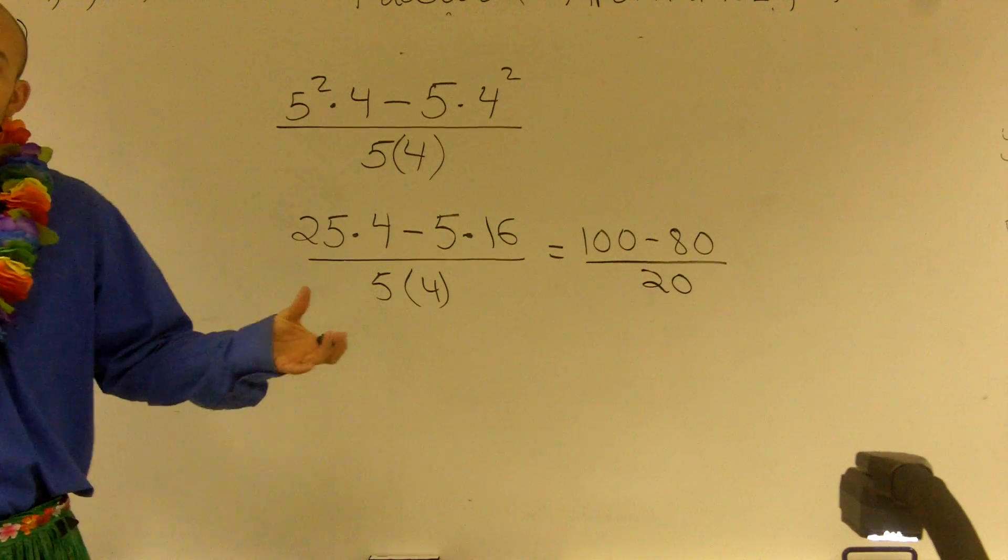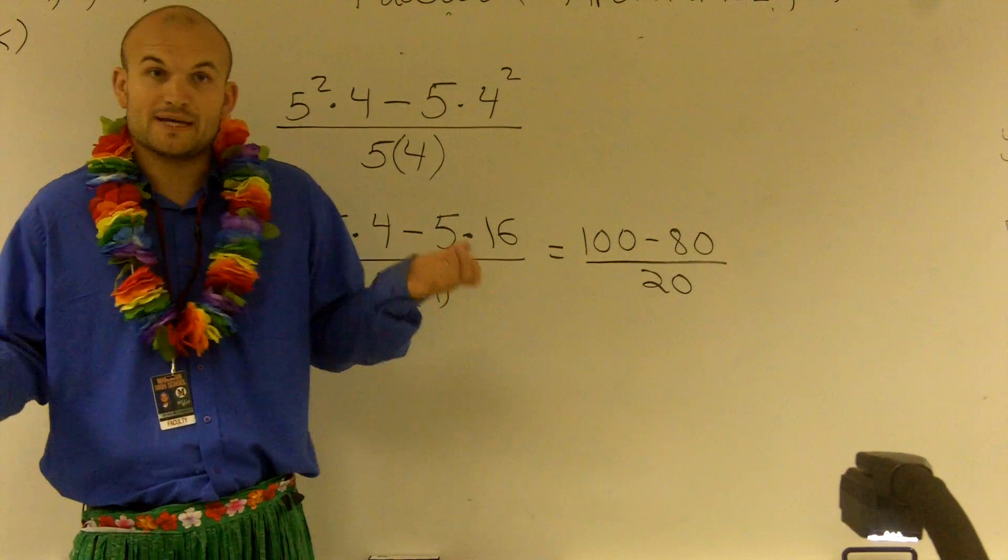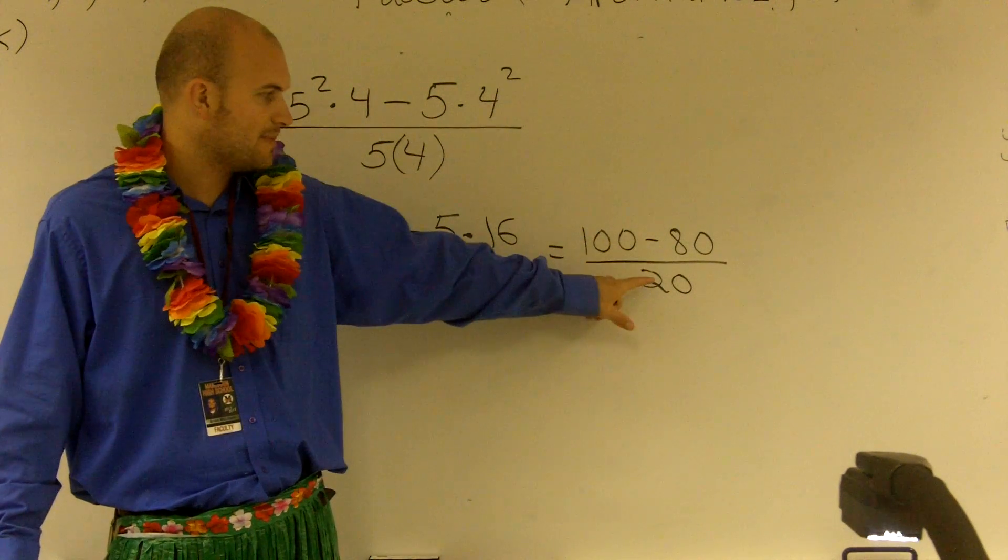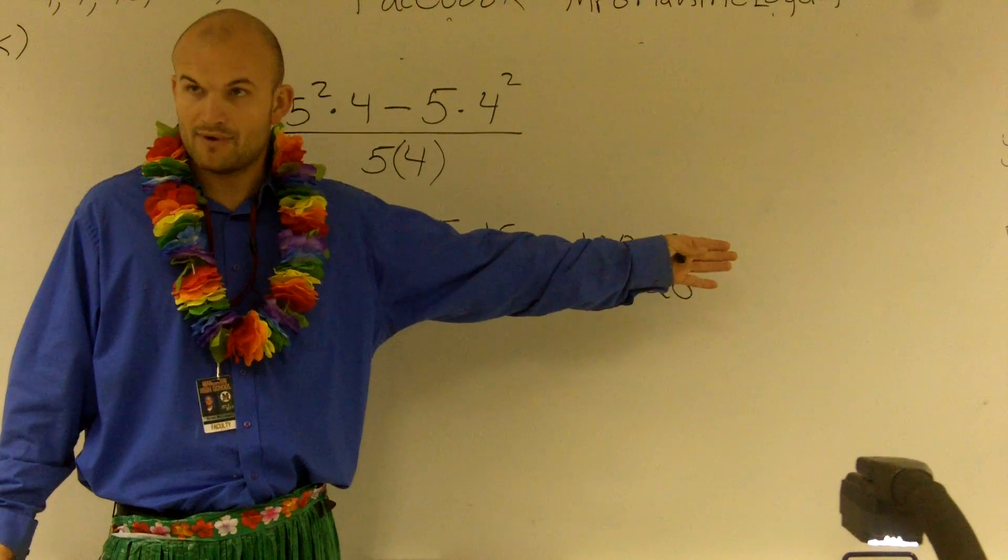Now we can do this two different ways. We could say you're supposed to do division next, either multiplication or division. So you could do 100 divided by 20 and 80 divided by 20, and then subtract. We could do it that way.